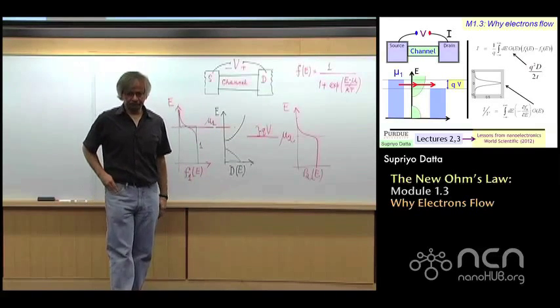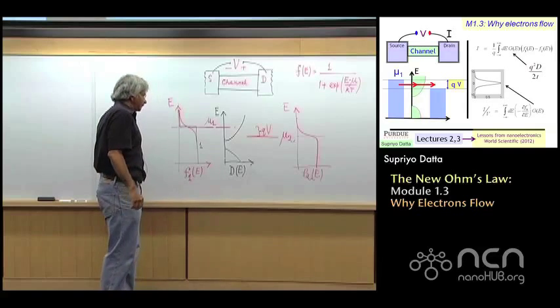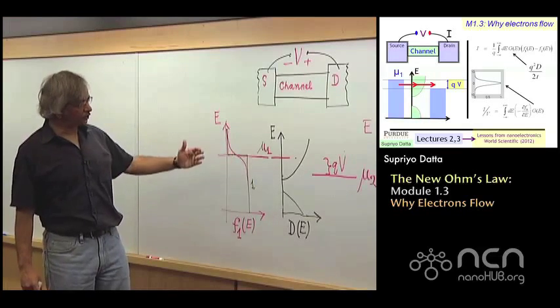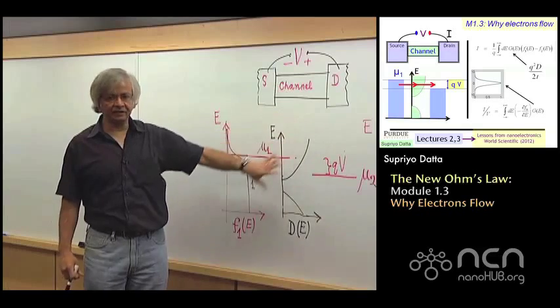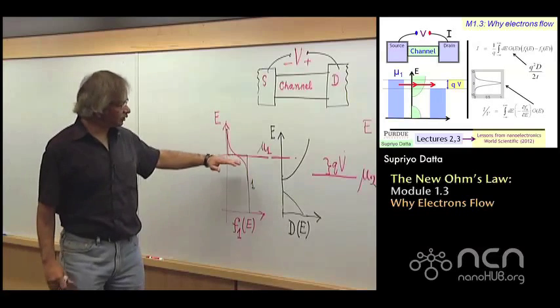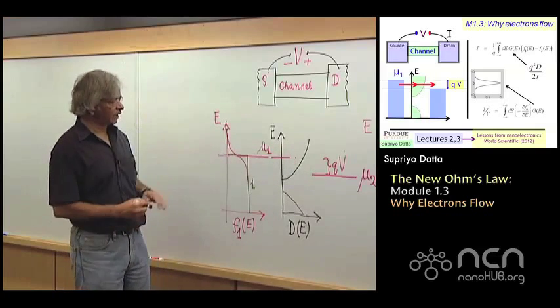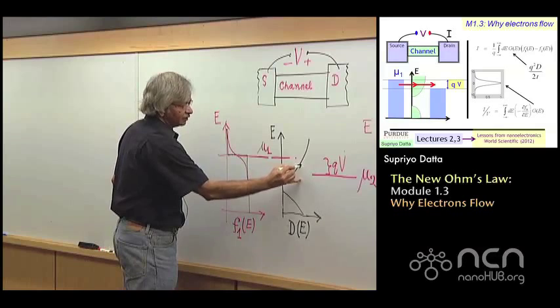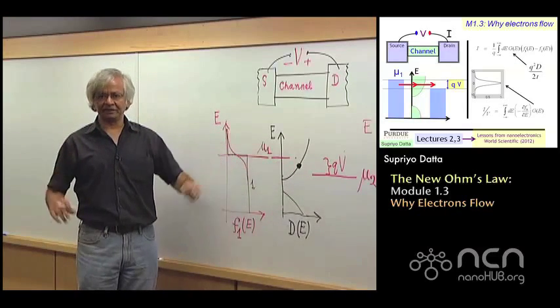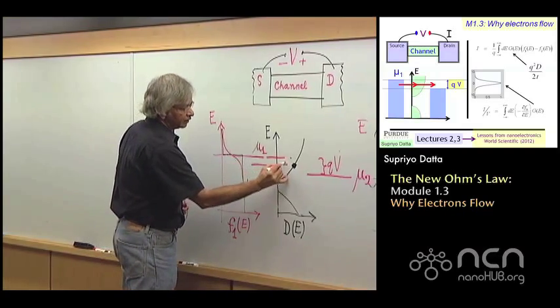Now why does current flow? When you apply a voltage, current will flow. And why does it flow? Well, the argument goes something like this. The left contact would like to bring the channel into equilibrium with itself, and into equilibrium with itself means it would like to keep the channel filled all the way up to mu 1. So if you consider a level here at that energy, this contact would like to keep that level fixed. And so, if it happens to be empty, it will immediately put in an electron there and fill it up.